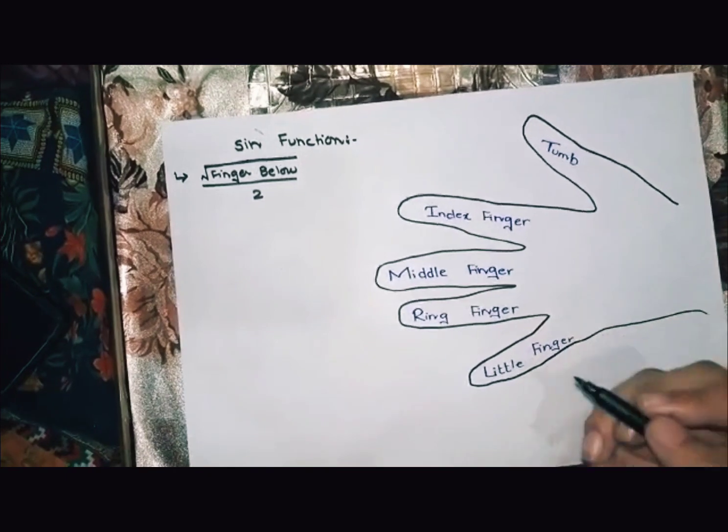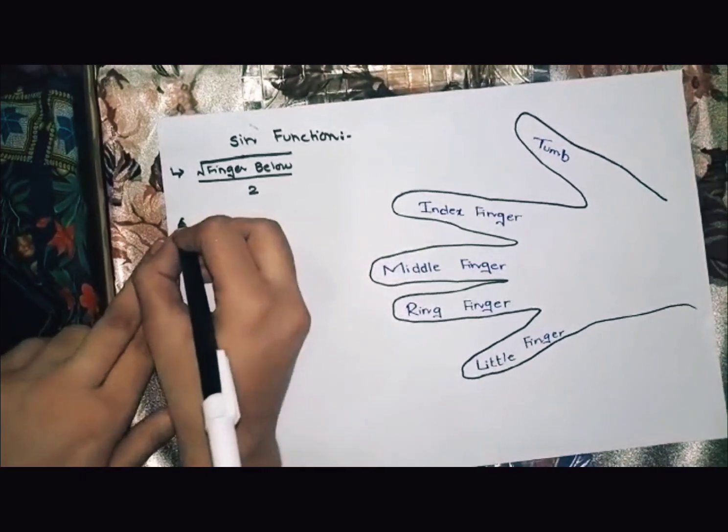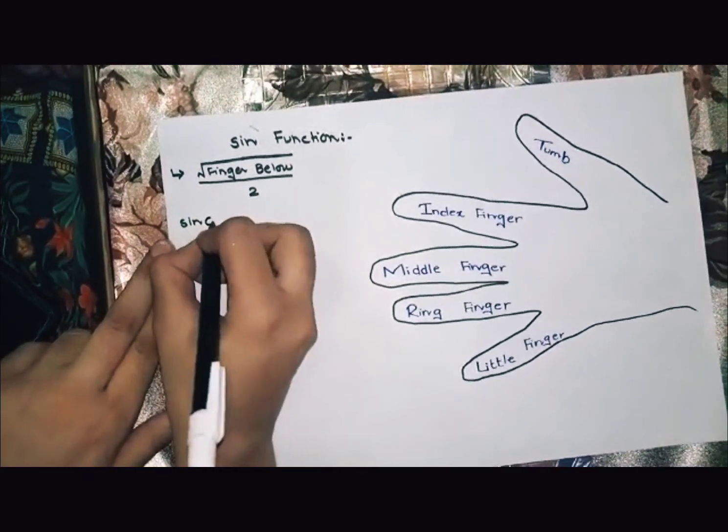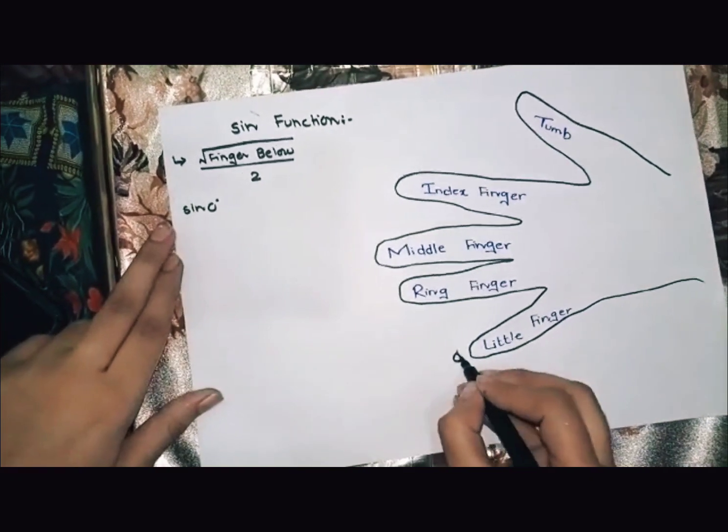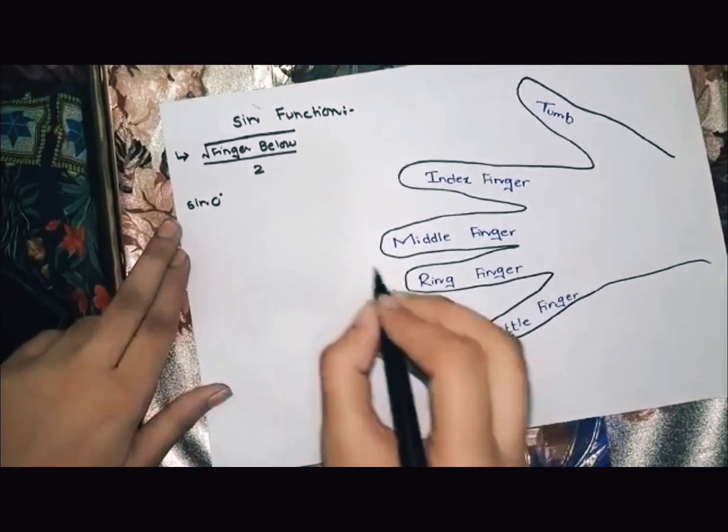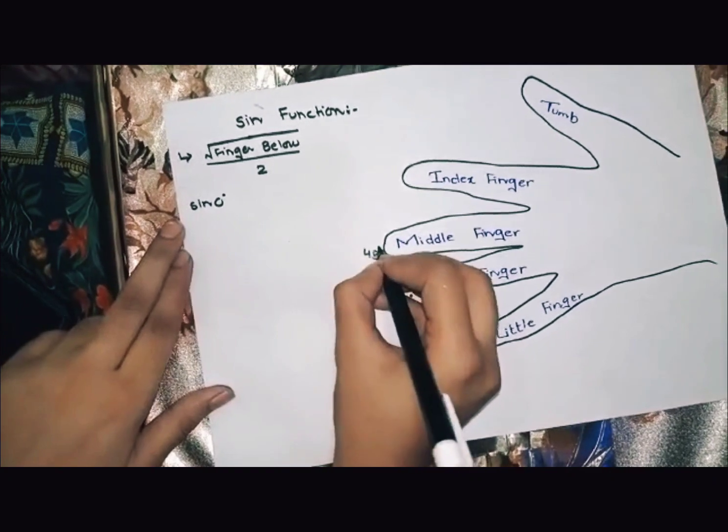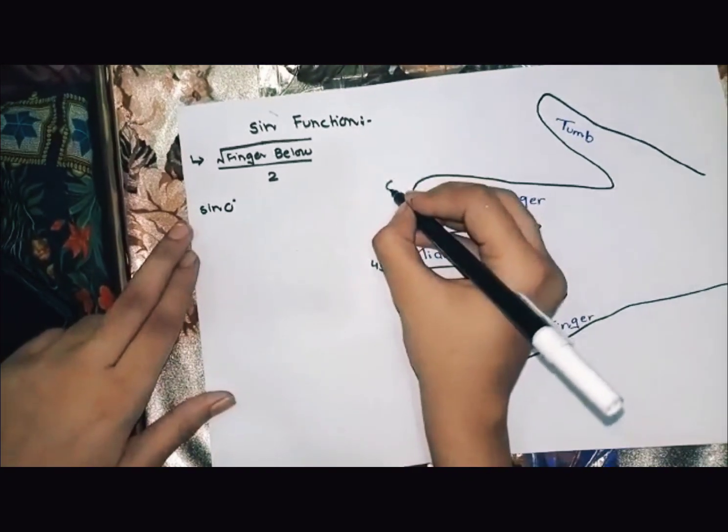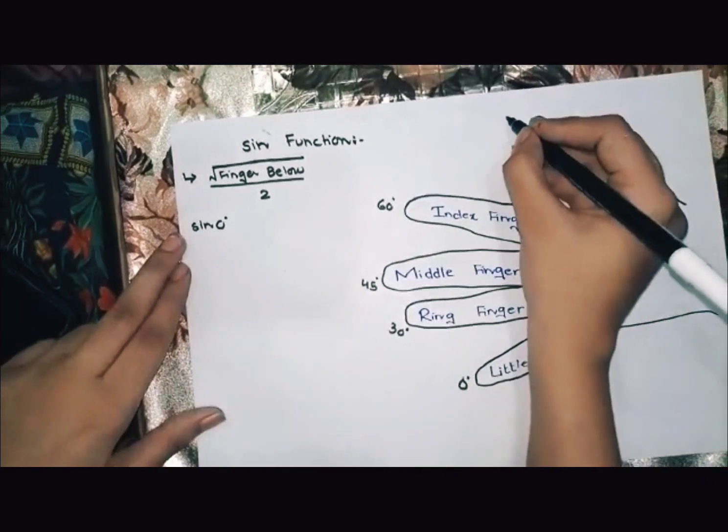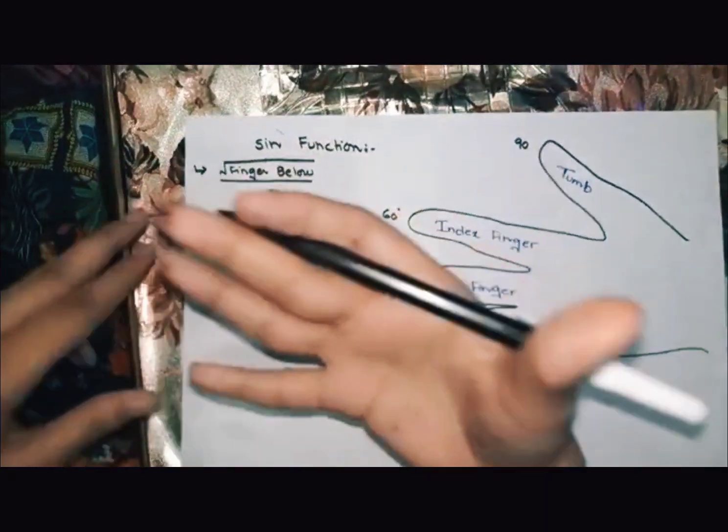We use the left hand. When we find sine 0 and 30, this one has 0 angle, this one has 30 angle, this one has 45 angle, this one has 60 angle, and this one has 90 angle.